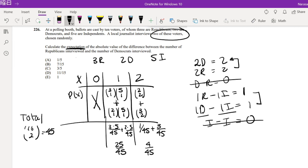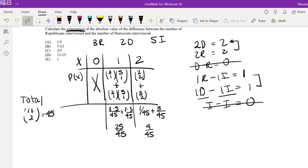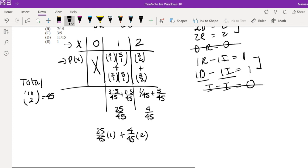And as always, in order to find our expectation, we just have to multiply the probability times our x. So that's going to be equal to 25 over 45 times one plus four over 45 times two. So this is equal to 25 over 45 plus eight over 45. So this is 33 over 45, which could be simplified down to, I could divide both sides by three. So this is 11 over 15, which is our answer D.